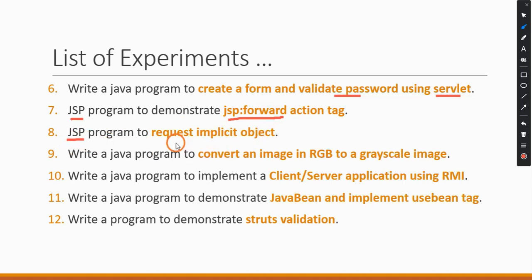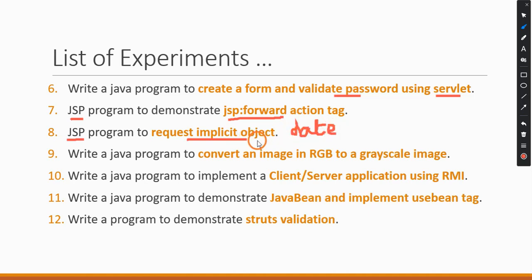The eighth program is again using JSP — they are asking us to use some implicit objects, for example the date object, and display the date and time. There are some implicit objects which are by default available in JSP, and they are asking us to use those objects and display whatever we want. The ninth program asks to write a Java program for converting an image from RGB to grayscale.